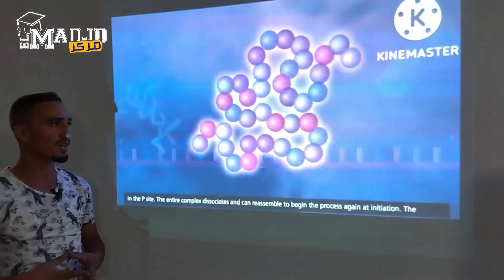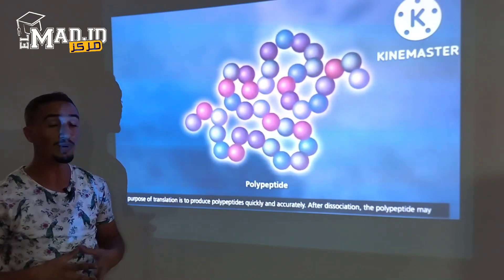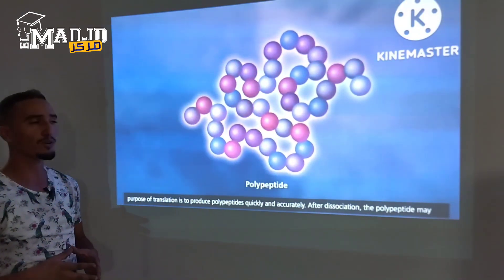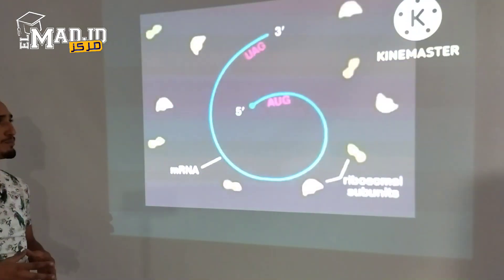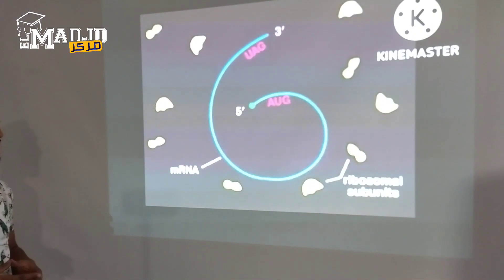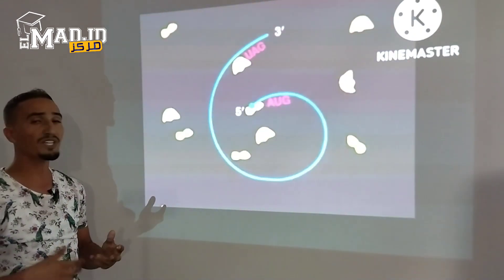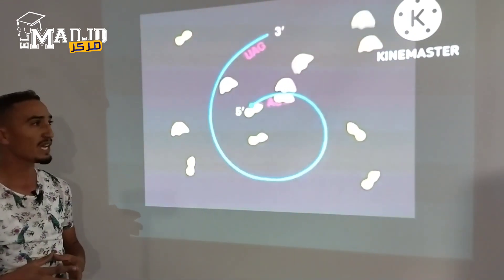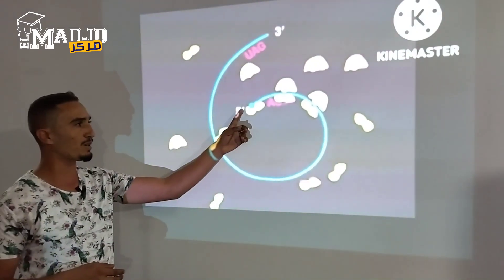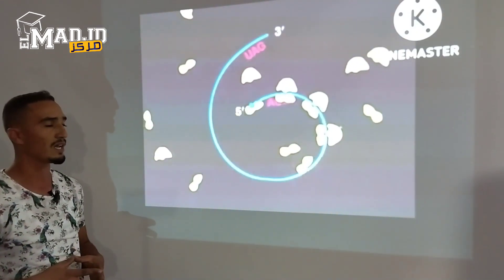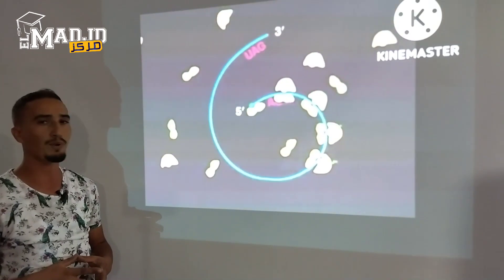The purpose of translation is to produce polypeptides quickly and accurately. Simultaneous translation is carried out by a polysome. A polysome is a group of ribosomes moving along the same mRNA. Each ribosome begins at the five prime end of the mRNA and progresses steadily towards the three prime end.